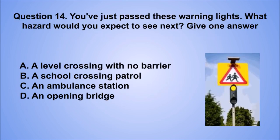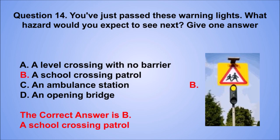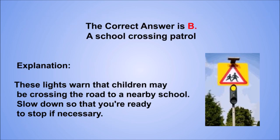Question 14. You've just passed these warning lights. What hazard would you expect to see next? Give one answer. A. A level crossing with no barrier. B. A school crossing patrol. C. An ambulance station. D. An opening bridge. The correct answer is B, a school crossing patrol. These lights warn that children may be crossing the road to a nearby school. Slow down so that you're ready to stop if necessary.